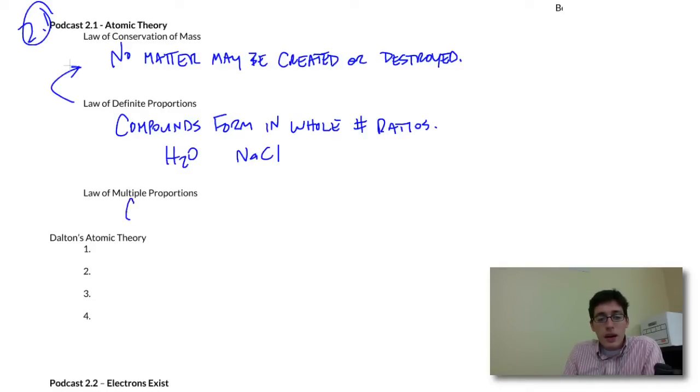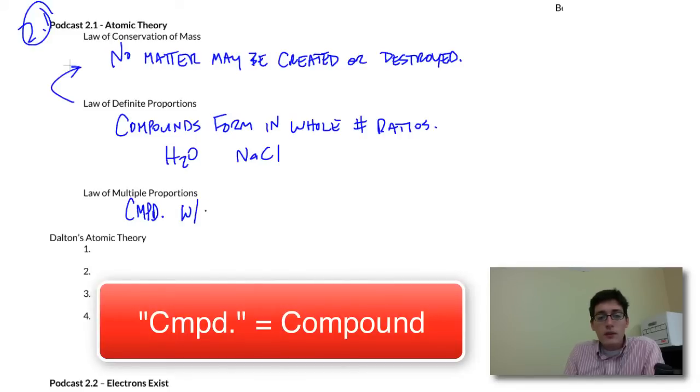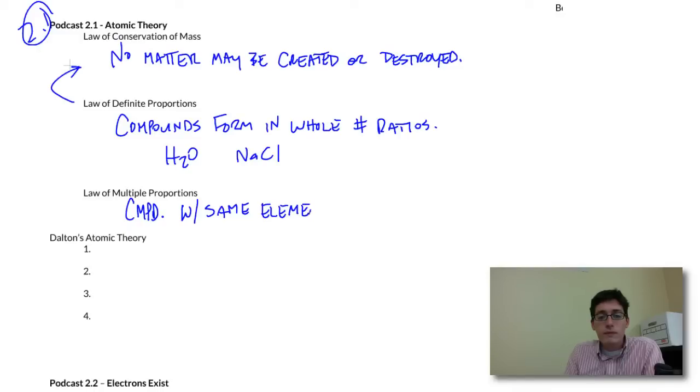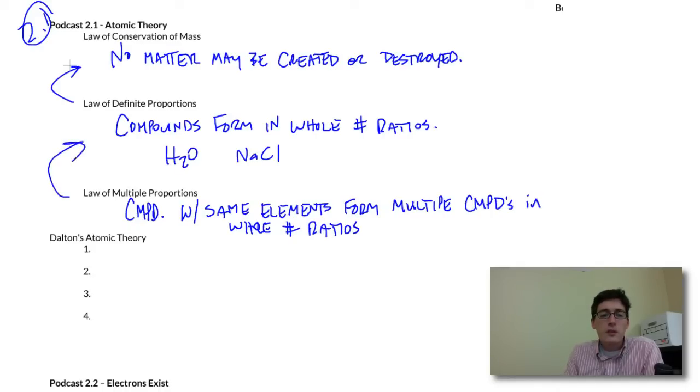And finally, the law of multiple proportions says that compounds with the same atoms or the same elements, they can form multiples for multiple compounds in whole number ratios. This one is a little hard to grasp. It's still based on the definite proportions and the conservation of mass. So here's a quick example. Water is H2O. Hydrogen peroxide, like when you get a cut, is H2O2. We've got the same elements, but we're changing our composition. So water as a compound is different than hydrogen peroxide. Notice hydrogen peroxide still forms in a whole number. I've got two hydrogens for two oxygens, whereas in water we've got two hydrogens for one oxygen. Always going to be a whole number.